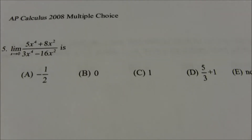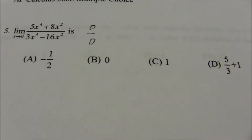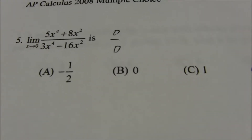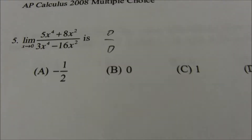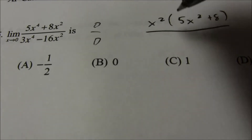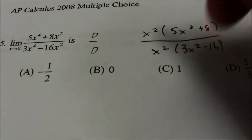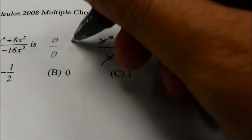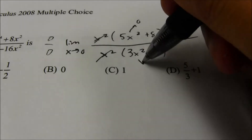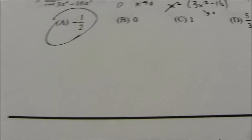Number 5 is a limit as x approaches 0 — not infinity. Substituting 0 gives 0/0, an indeterminate form. You could use L'Hôpital's rule or factor. I factor x squared out of the numerator and x squared out of the denominator, getting 3x squared minus 16. Cancel the x squareds, and try the limit again. Putting 0 in, the numerator gives 8 and the denominator gives negative 16, which equals negative 1/2. That is one of the choices.